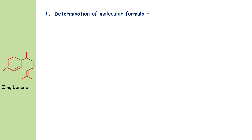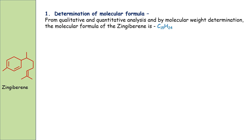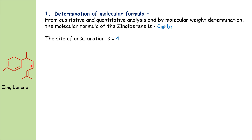From qualitative and quantitative analysis and molecular weight determination, the molecular formula of gingivirine is C15H24. The degree of unsaturation calculated from this formula is 4 — three for the double bonds and one for the ring.